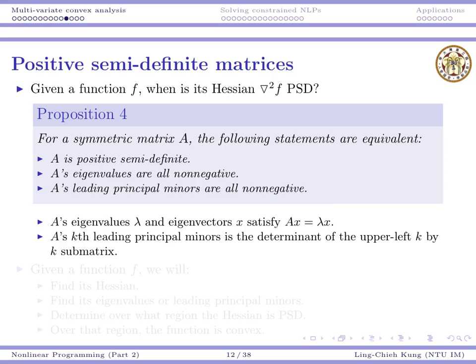Let's do a brief review. A's eigenvalues, call them lambda, and the associated eigenvector x satisfy Ax = lambda x — that is the definition of eigenvalues and eigenvectors. For leading principal minors, it's the determinant of an upper-left k-by-k submatrix. The first leading principal minor is the upper-left corner number, whose determinant is itself. The second leading principal minor is the upper-left 2-by-2 submatrix determinant.